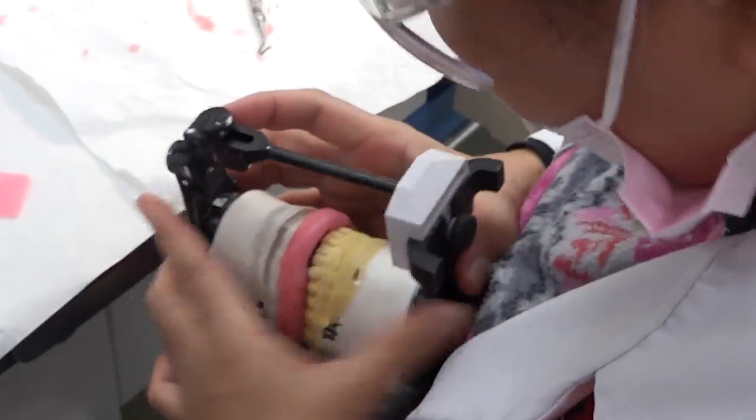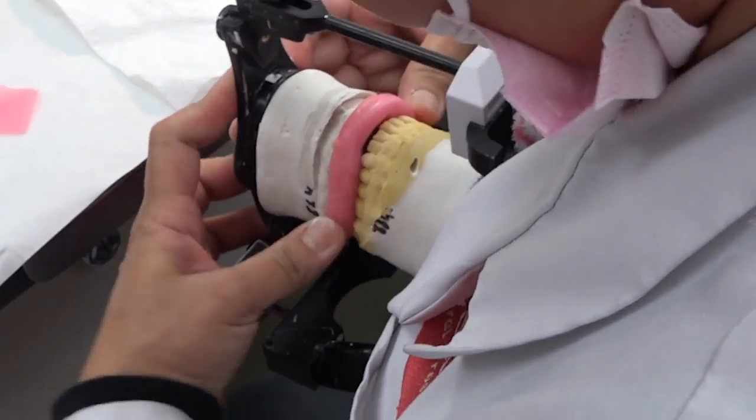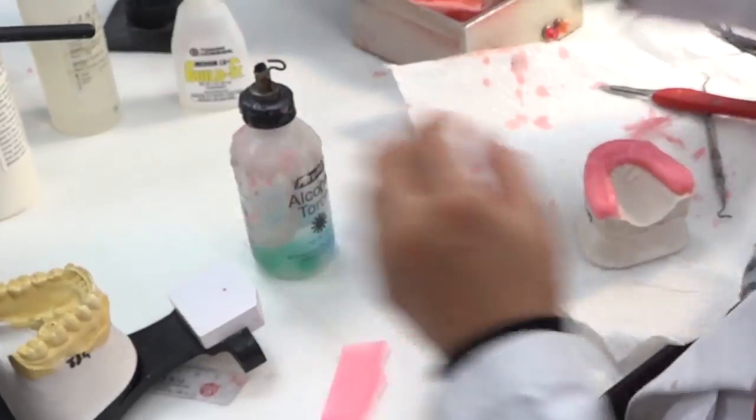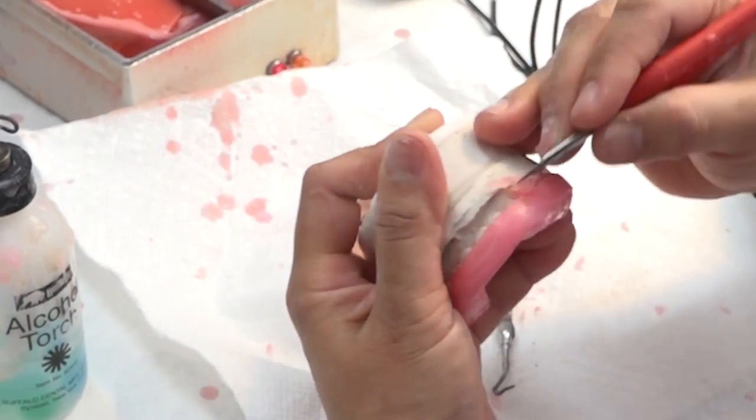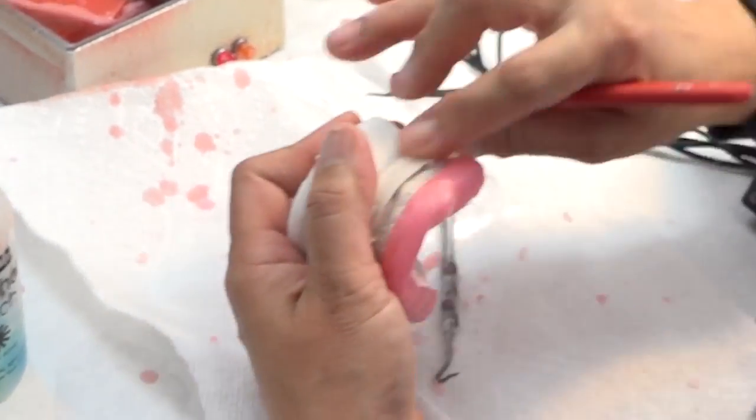Layer in smooth wax to the right thickness so the bite is closed. Cut the wax to create the edge of the night guard, about two-thirds of the way up the teeth.